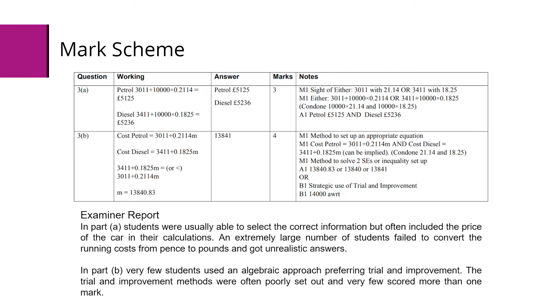So here's the mark scheme and examiner report. You can see that students were able to select the correct information, but sometimes included the price of the car in the calculations. Some were also not able to convert the running costs from pence to pounds. For part B, very few students used the algebraic approach. Some just used trial and improvement. This didn't lead to successful attempts.